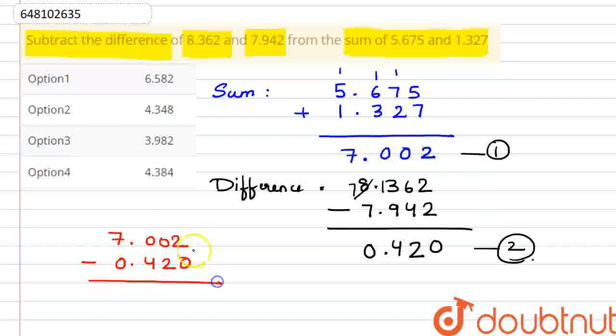We will subtract these two. 2 minus 0 is 0. 0 minus 2 is not possible, so we will carry over here. This will be 10. When we carry over, here we will have 10, here we will have 9, and here we will have 6. So 10 minus 2 is 8.